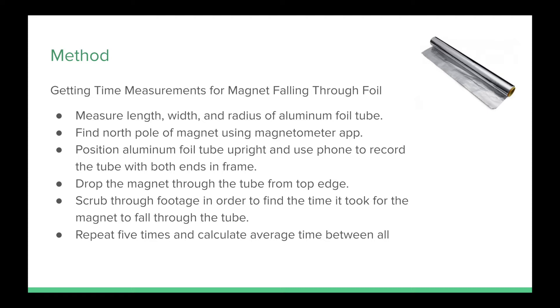We can then drop the magnet through the tube and scrub through the recording to find the time it took for the magnet to travel the length of the tube. We'll then repeat the experiment five times and calculate the average time between the trials.